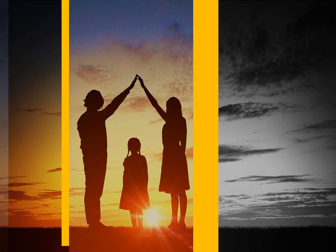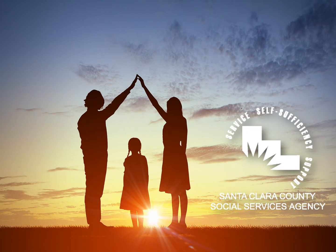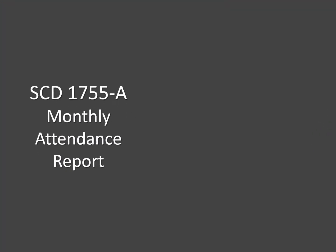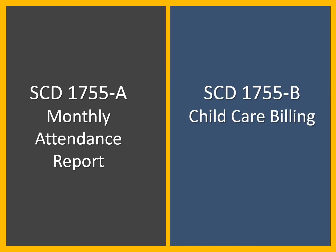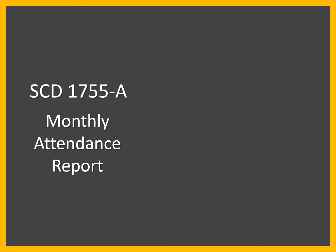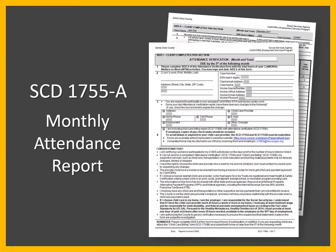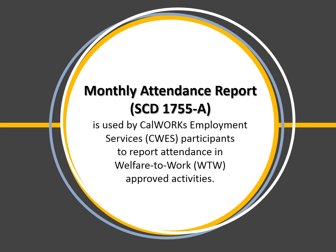This video provides instructions for completing your CalWORKs Employment Services monthly attendance and child care billing forms. CalWORKs Employment Services participants are required to complete a monthly attendance report. If your child care is approved through the CalWORKs program, you're also required to turn in a completed monthly child care billing form. The attendance report is called the SCD 1755-A. It has two sides that must be completed, and it is used to report attendance and W2W approved activities. Your employment counselor will be assigning you activities based on your W2W plan.